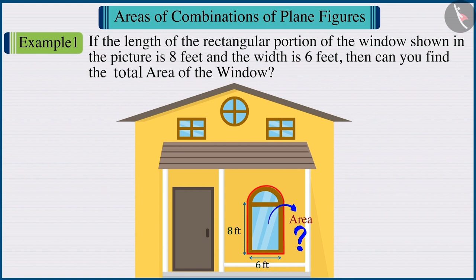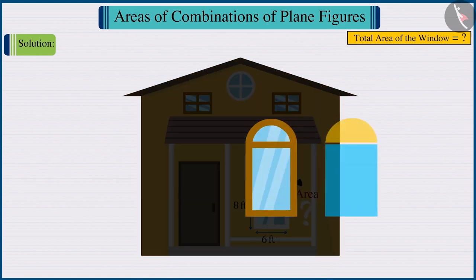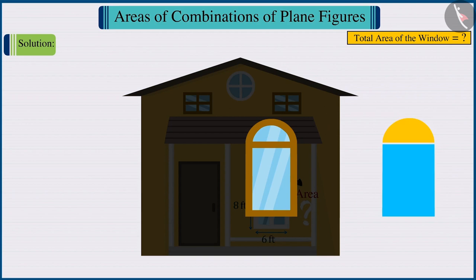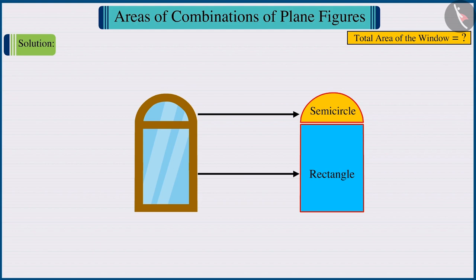Let's discuss this. First, let's make a rough figure of the window. Looking at the window carefully, we can say that the upper portion is semicircular and the lower portion is rectangular.